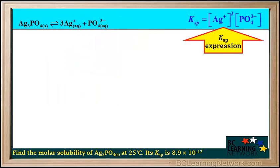Here we'll write the Ksp expression for this reaction. Ksp equals the concentration of Ag+ cubed times the concentration of PO4 3-.